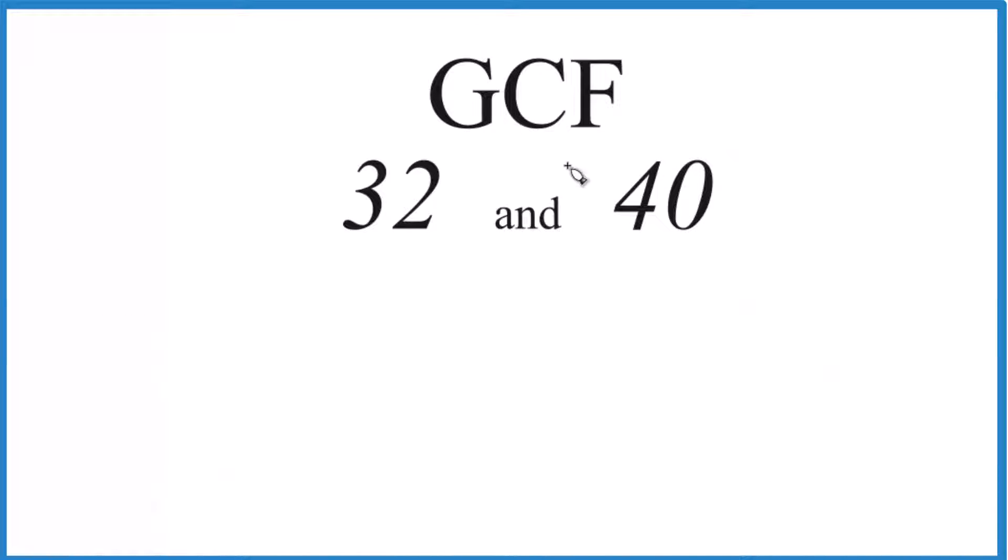What we do is find the factors for 32 and 40. Then we find the common factors between them. Choose the greatest one. That's the GCF.